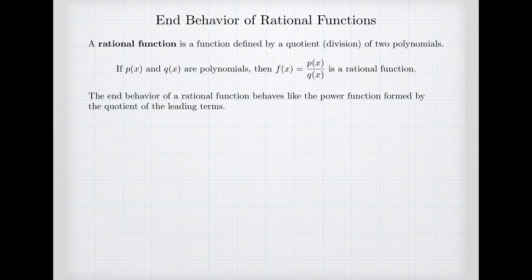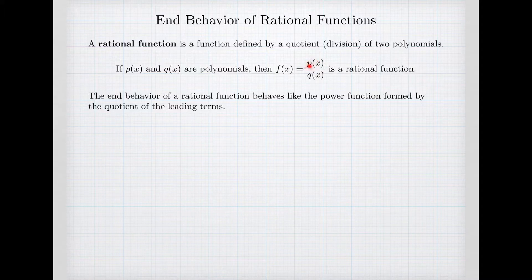In this video, we'll look at the end behavior of rational functions. A rational function is a function defined by a quotient, meaning division, of two polynomials. So imagine that p and q are two polynomials, and I define a function where I take p of x divided by q of x. This function is what we call a rational function.